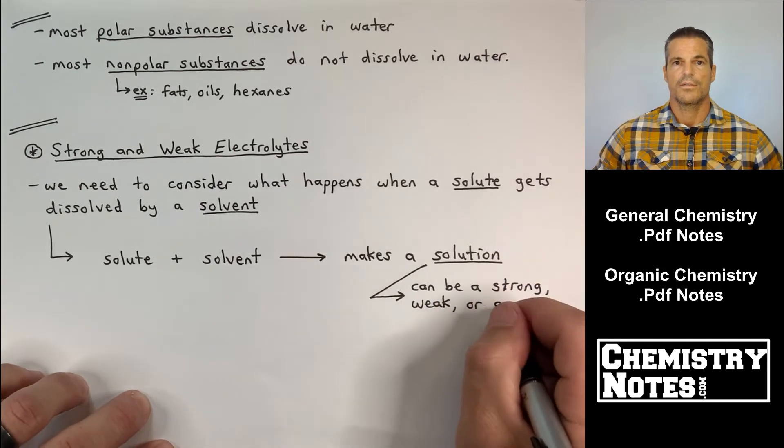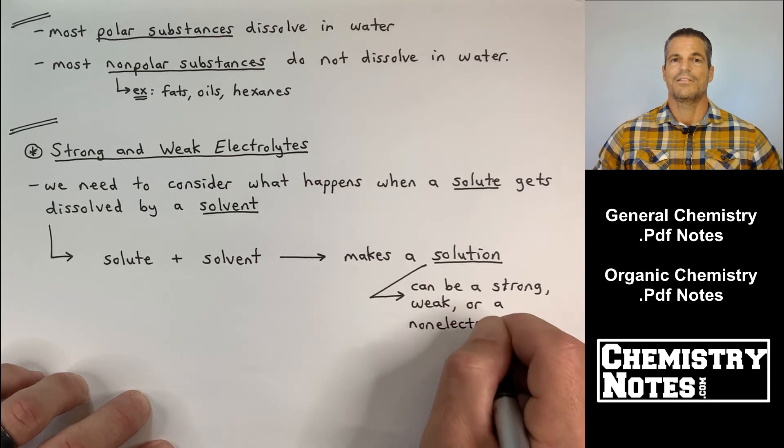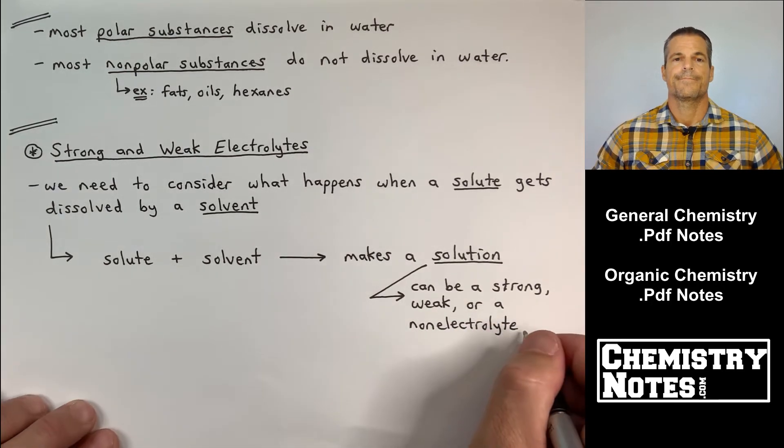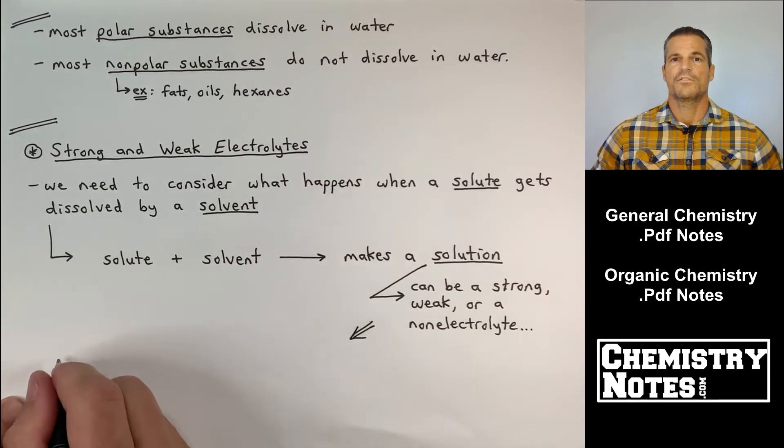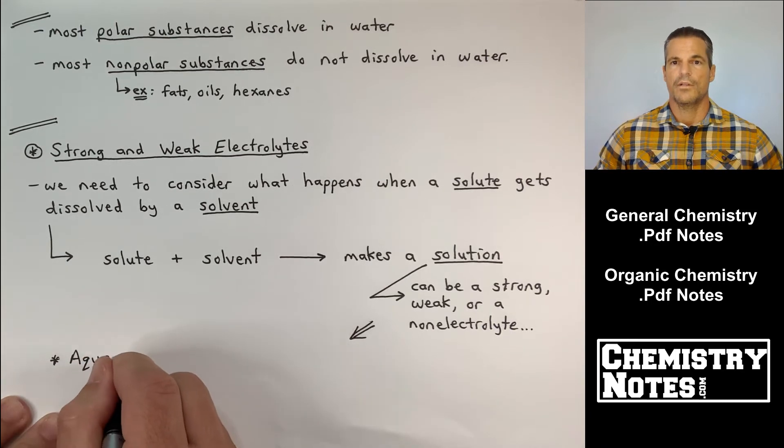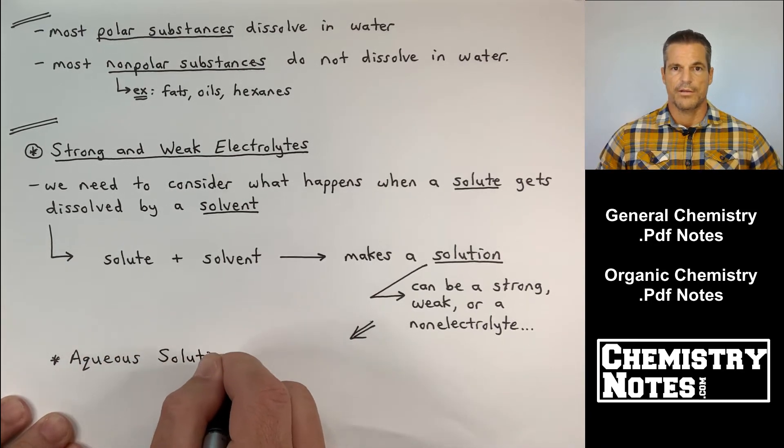And a solution can be a strong electrolyte, a weak electrolyte, or a non-electrolyte. And a solution is just uniform throughout, we learned about this in section one, it's a homogeneous mixture and it's a solute that's been dissolved by a solvent. So how do we know if it's a strong electrolyte, a weak electrolyte, or a non-electrolyte? How do we know that about our solution that we just made?